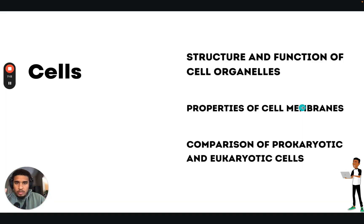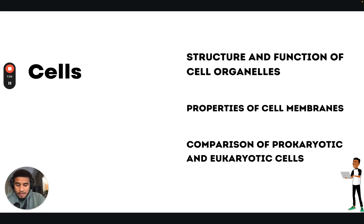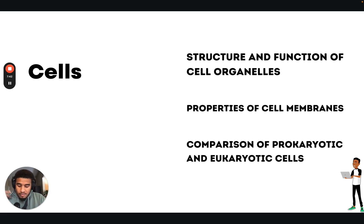Next we're going to talk about cells — structure and function of cell organelles. Here's what you need to know for this topic. You need to understand what a cell membrane is — the plasma membrane and overall structure of a cell. You need to understand the different parts: nucleus, endoplasmic reticulum, ribosomes, mitochondria, Golgi apparatus, lysosomes, vacuoles, chloroplasts — all of those things. You need to understand the structure and function of each one.